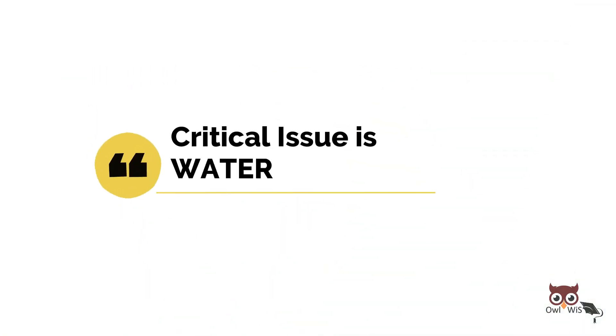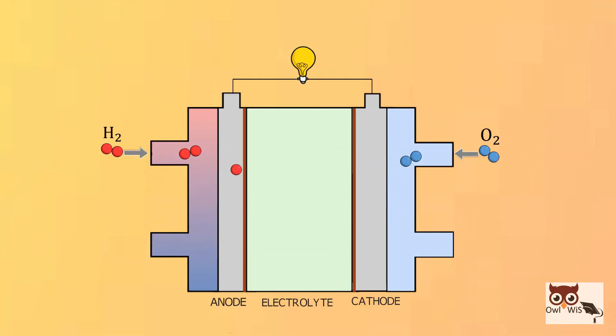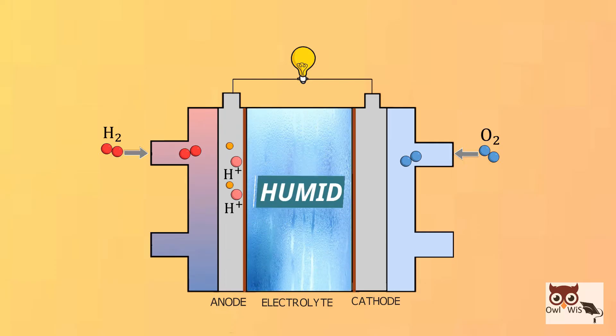A critical issue in PEM fuel cells is water management. In order to operate properly, the polymer membrane needs to be kept humid as the conduction of ions in the polymer membranes require humidity.